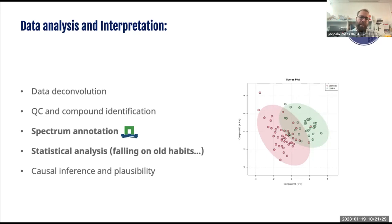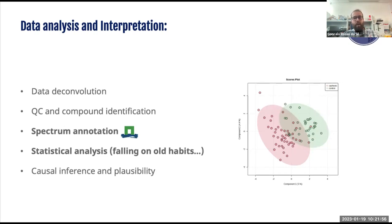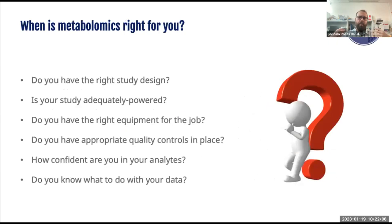Just because a molecule is there — especially if you're only using metabolomics and not systems biology — you cannot always be completely sure of why it's there. With biomarkers this can sometimes be a problem. If you're using metabolomics data to infer causality for a particular disease or mechanism, it's very important to complement it with something meatier. As a quick summary: it's important to know when metabolomics is right for you before you do anything, and I really hope you get from the following two talks a sense of whether you have the right study design, adequate statistical power, proper equipment, appropriate quality controls, and confidence in your analytes.